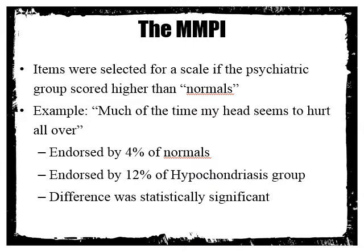How did they come up with the items for the MMPI? They selected an item for a subscale if the psychiatric group scored higher than the normals. For example, 'Much of the time my head seems to hurt all over' — an item from the hypochondriasis subscale — was endorsed by 4% of normals compared to 12% from the hypochondriasis group. That statistically significant difference meant the item was retained because it differentiated normal from abnormal.